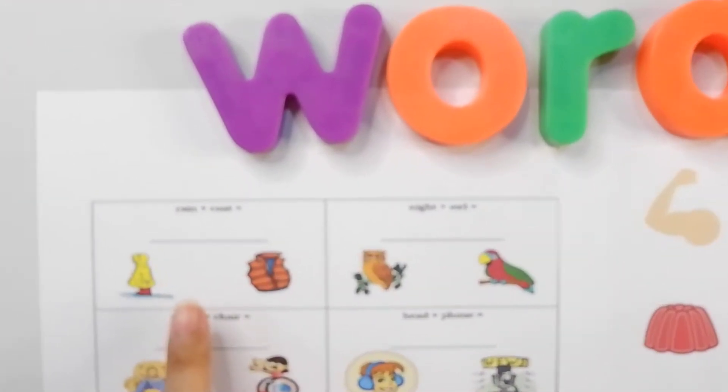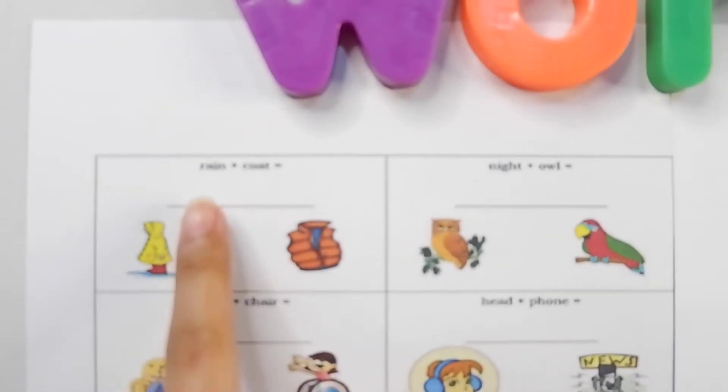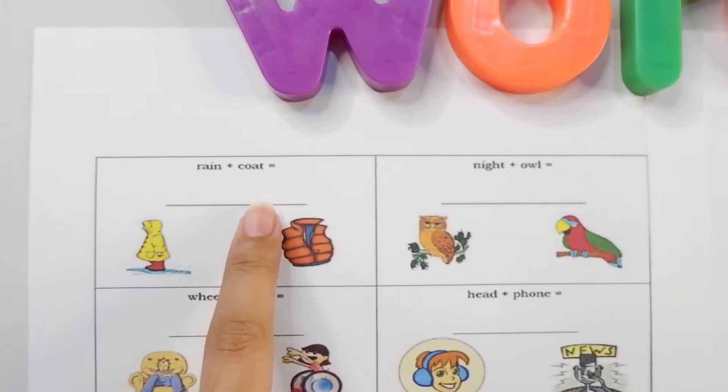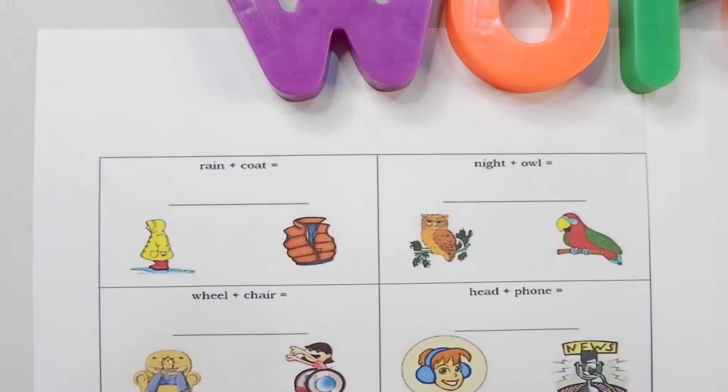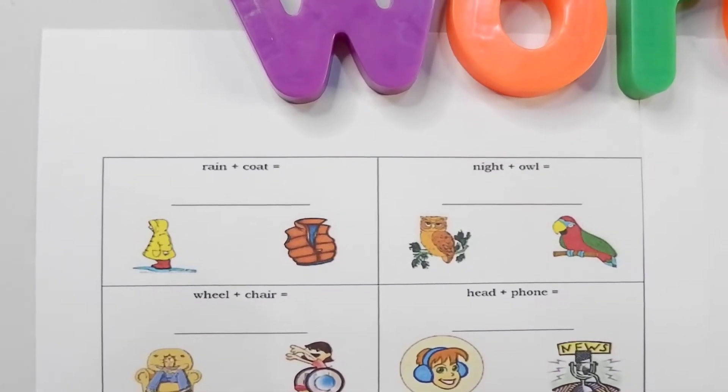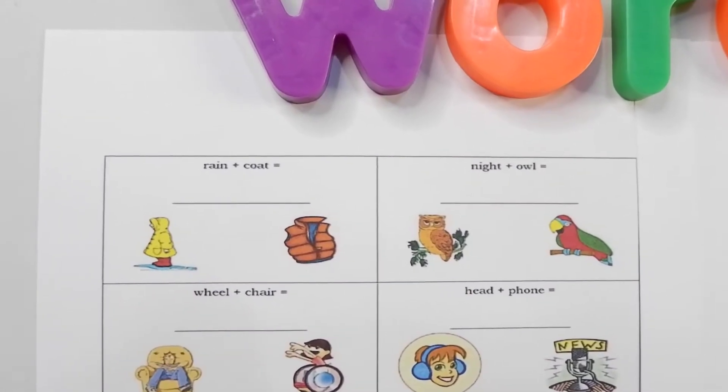Look over here chameleons! We have here rain plus coat. Put them together we get raincoat. Let's put a check.